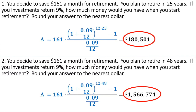Now this one's kind of interesting. Some people refer to it as the most powerful law in the universe — and that's compound interest. It is extremely powerful. You're going to save the same amount, $161 a month, at the same interest rate of 9%. If you do it for 25 years, you get $180,000 — not bad, that's pretty good. But if you can wait just a little bit longer — another 23 years on top of that — you're going to have $1.5 million, almost $1.6 million.